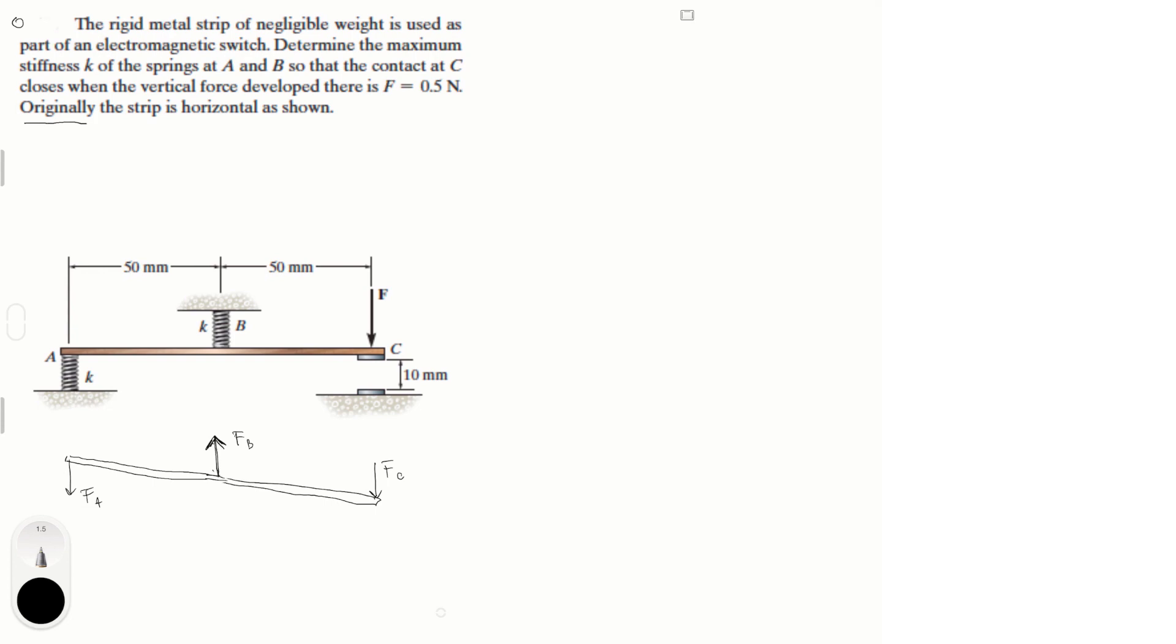Okay, so the first thing that we're gonna do is we're gonna do the sum of the moments at B to try and find the relationship between F of C, I'm calling this F of C, and F of A. Okay, so some of the moments at B is equal to F of A times 0.05, 0.05 is the 50 millimeters, I like to convert it into meters always.